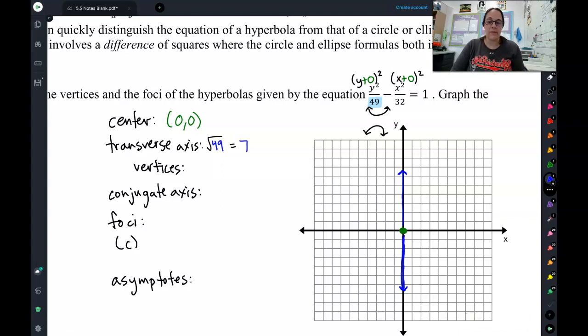Now, we know that it's 7 up and down, but just like ellipses, we need to also describe where this axis is. Not just how long it is, but where it is. So this line, this transverse axis line, looks like it is at x equals, because it crosses the x axis, x equals 0, because it crosses the x axis at 0.